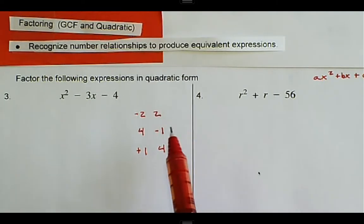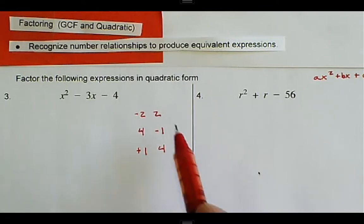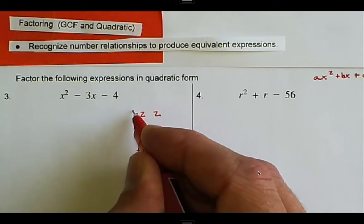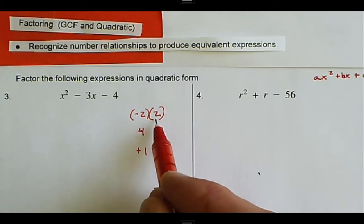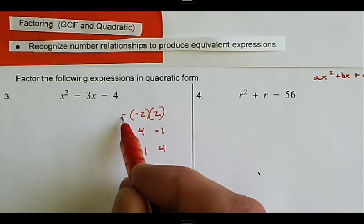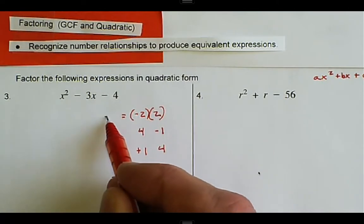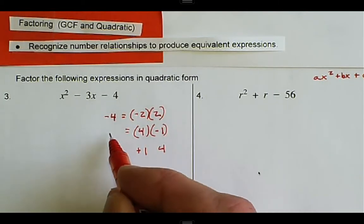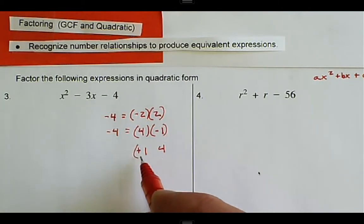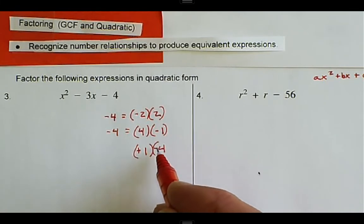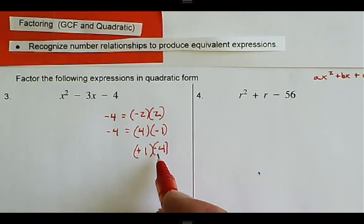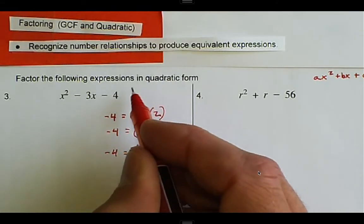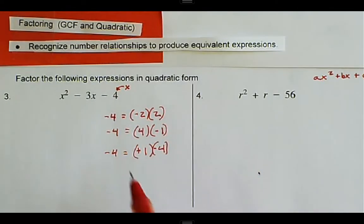Now the product of all these pairs: negative two times two equals negative four; four times negative one equals negative four; and one times negative four also equals negative four. So the product works for all three pairs — we can multiply to get negative four.